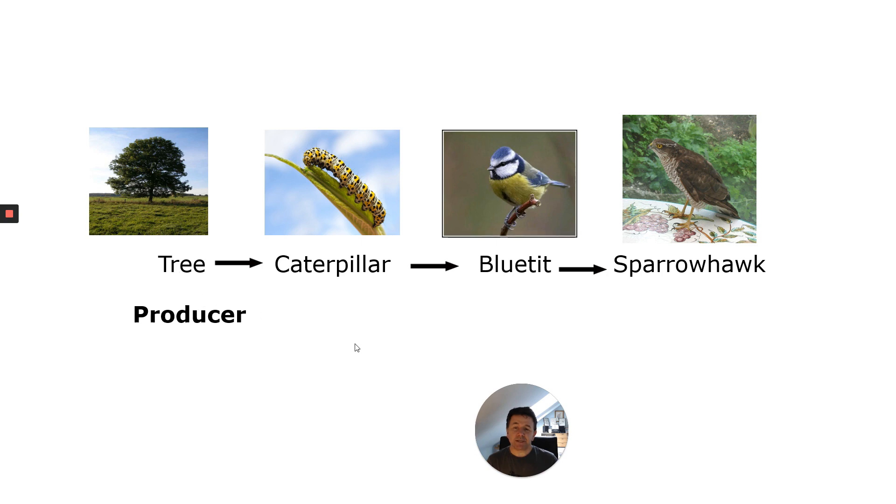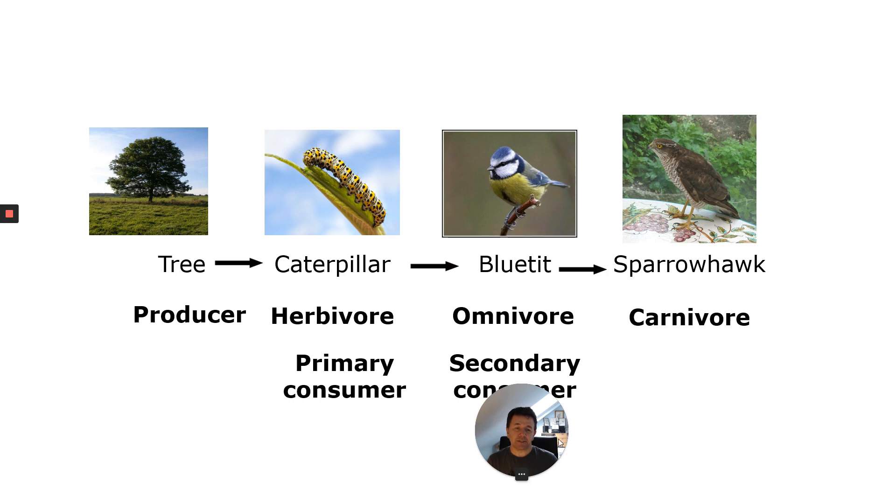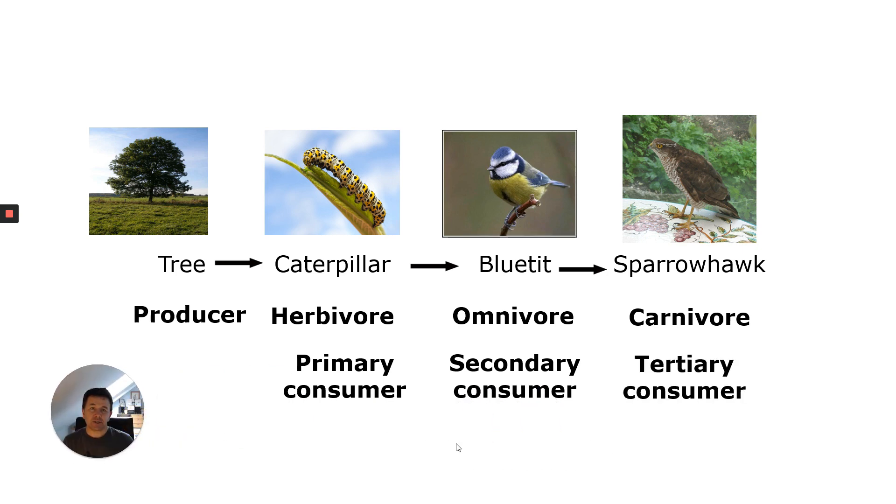In your answer, you should have the tree as producer, caterpillar is a herbivore, the blue tit is an omnivore that eats caterpillars but also seeds, and the sparrowhawk is a carnivore. Then you have the different levels: producer, primary consumer, secondary consumer, and tertiary consumer. In the food chain you can see that there are different levels.